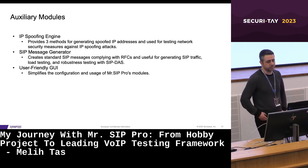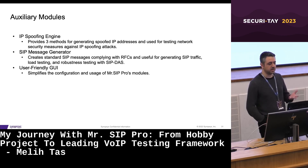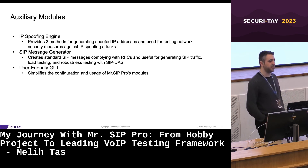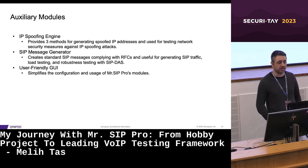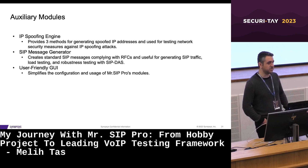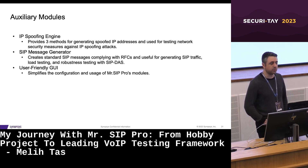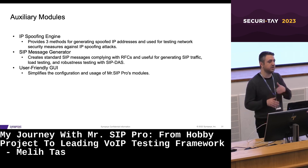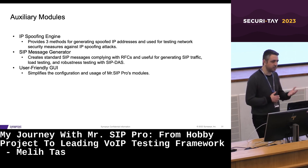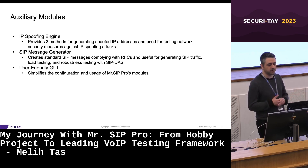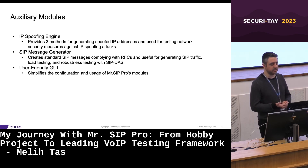There are auxiliary modules supporting other modules in the Mr. SIP Pro suite. The IP Spoofing Engine provides three methods for generating spoofed IP addresses: manual selection from a list, random generation, and identification of the current subnet to bypass URPF filtering if present on the network. It's used to test the effectiveness of network security measures against IP spoofing attacks. The SIP Message Generator creates standard SIP messages that comply with RFC specifications, and these messages can be sent to a destination over TCP or UDP — also useful for load testing and robustness testing in combination with SIP DoS. Lastly, there is a user-friendly GUI that simplifies the configuration and usage of the various modules in the Mr. SIP Pro suite.